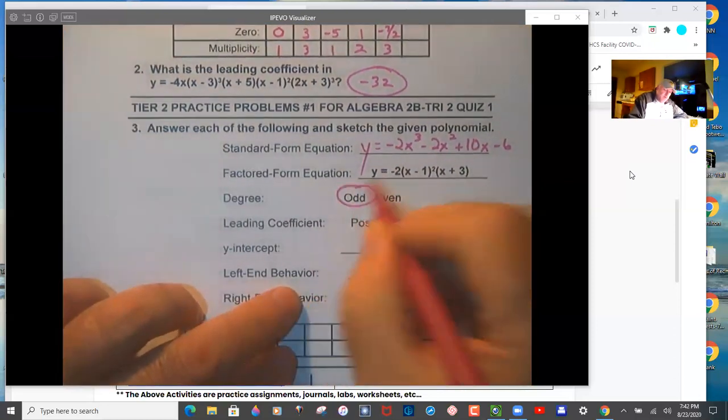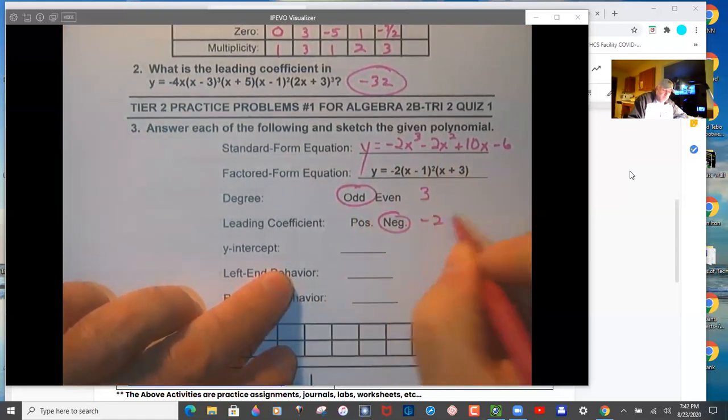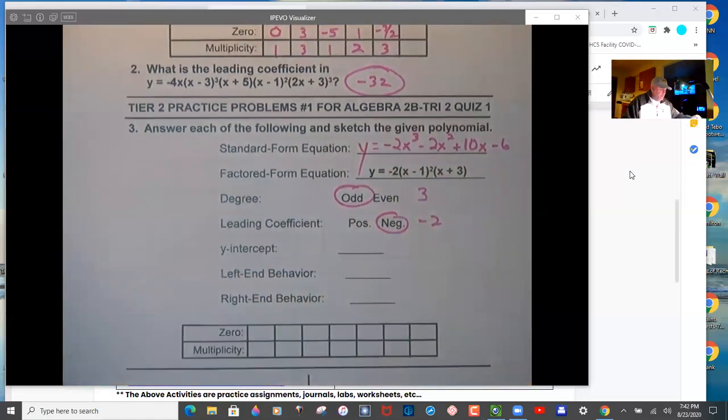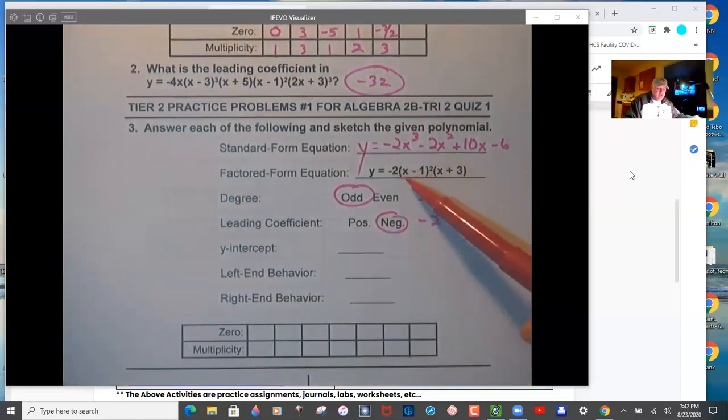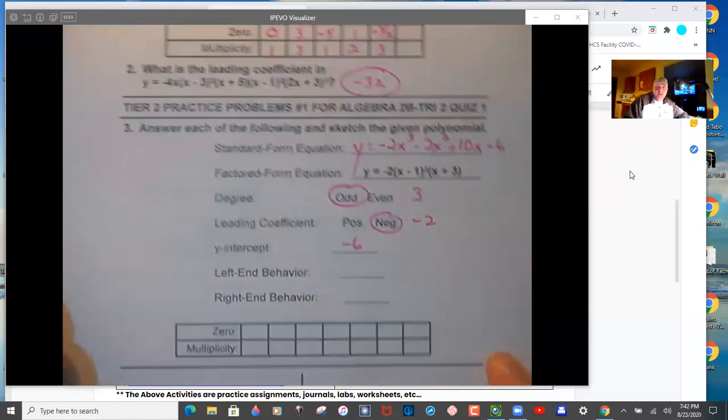So the degree is odd, three. The leading coefficient is negative two. You can see that on the expansion there. You would do negative two times one squared times one. The y-intercept is negative six. Again, that's that end value.